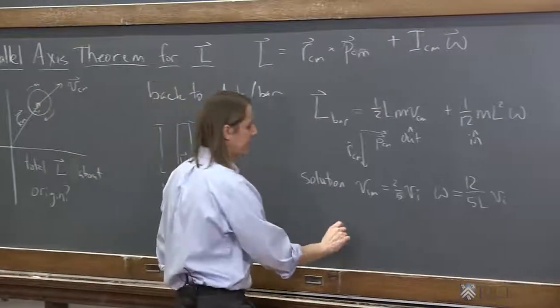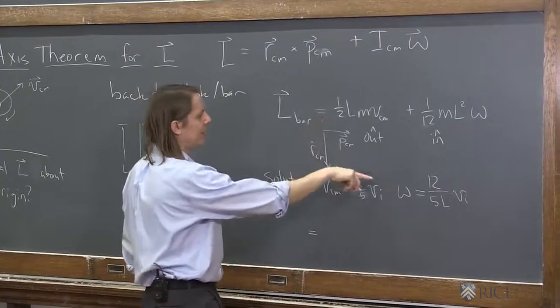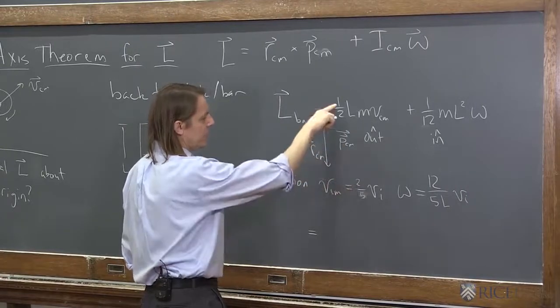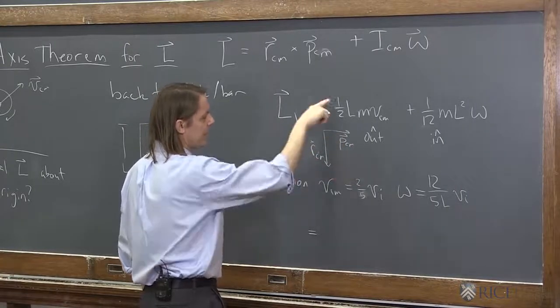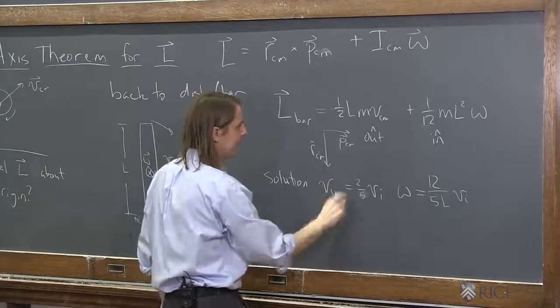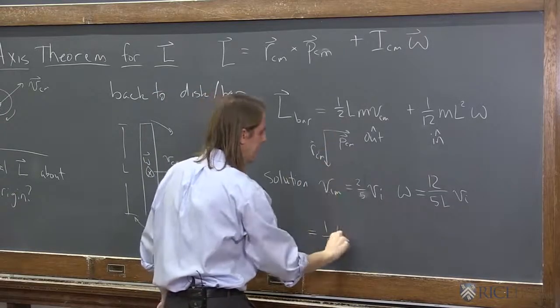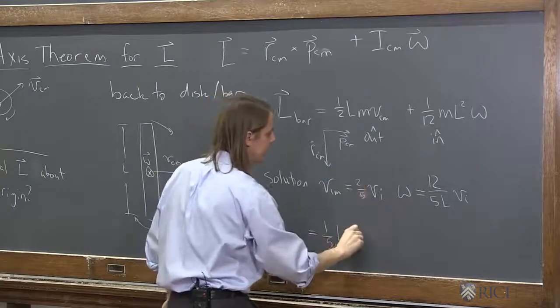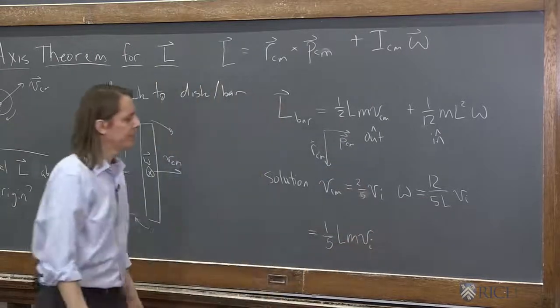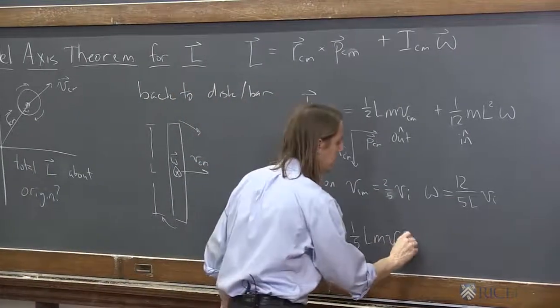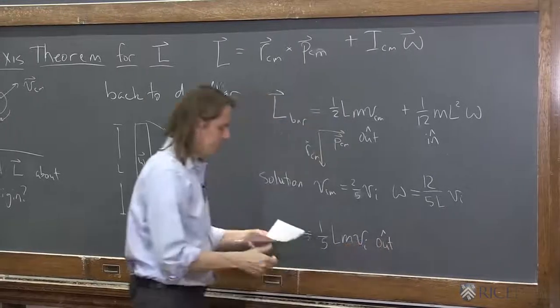All right, so now we can say, what's the total then? We'll plug these in. This is one-half, so that'd become two, one-fifth. The twos cancel. One-fifth LM, and then it's just VI instead of VCM. And that's out of the board.